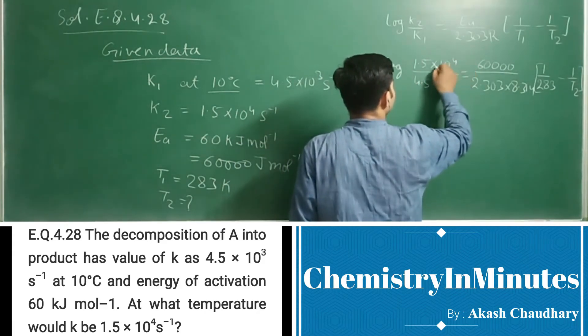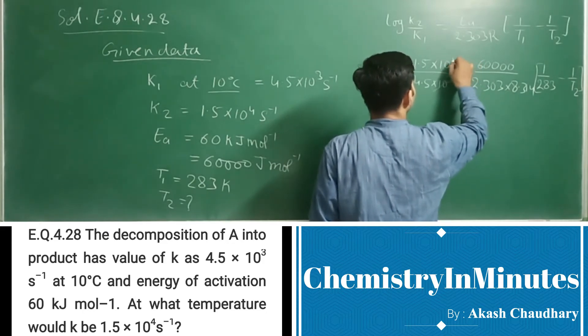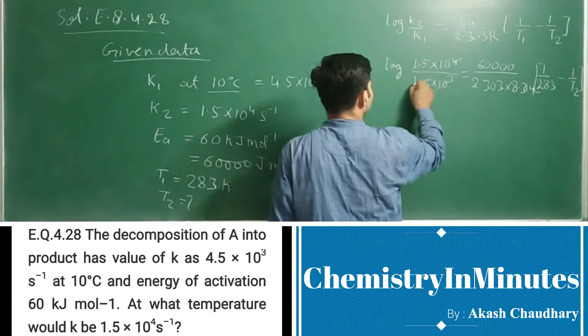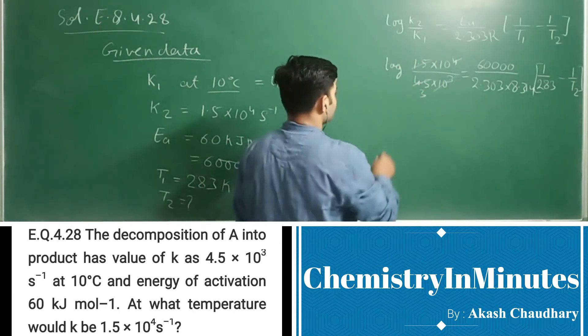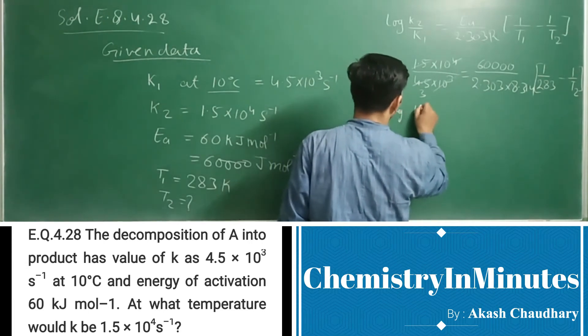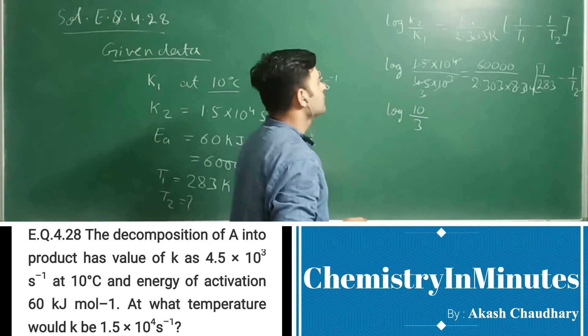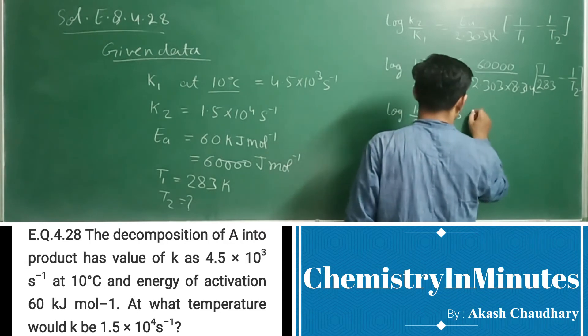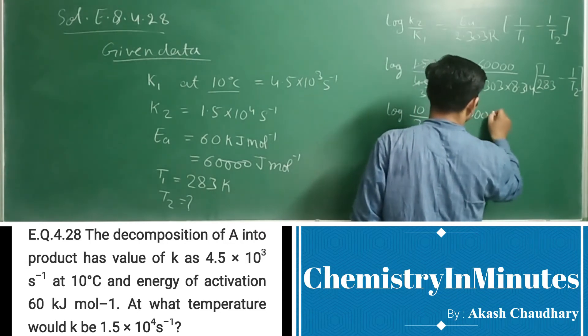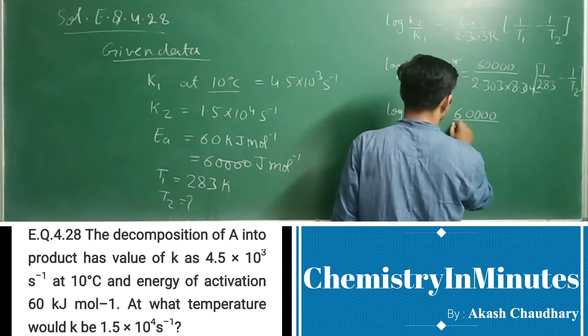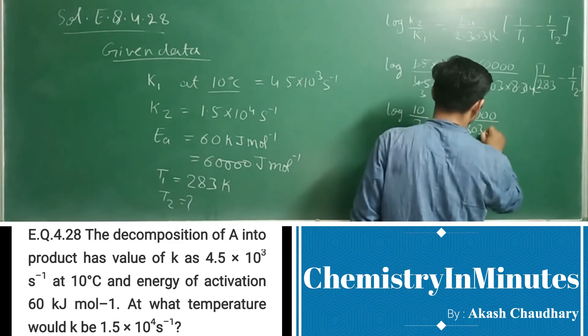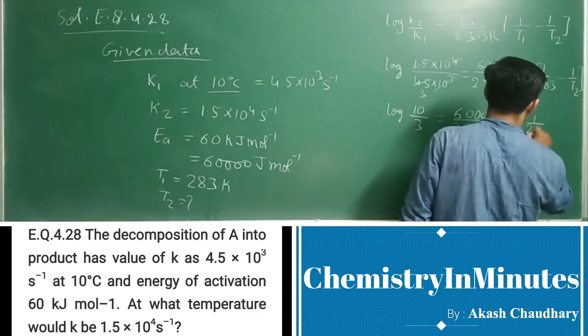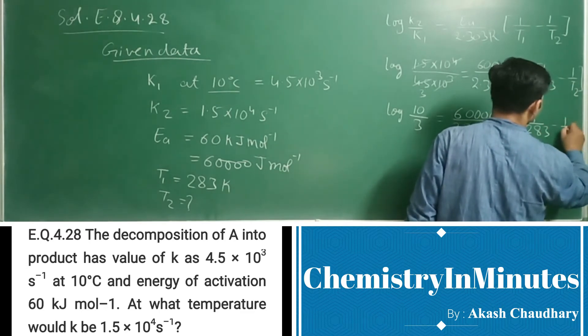Now here we can cancel this 10^3 with 10^4, so this 10 will be remaining here. And this 1.5 into 3 is 4.5, so here we will be getting log(10/3) equals 60,000 upon 2.303×8.314 times (1/283 - 1/T2).